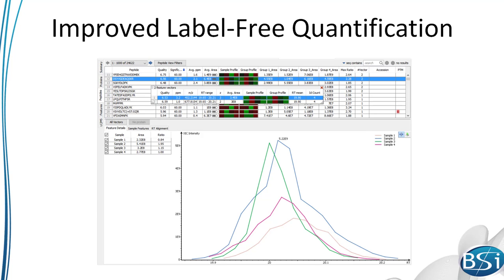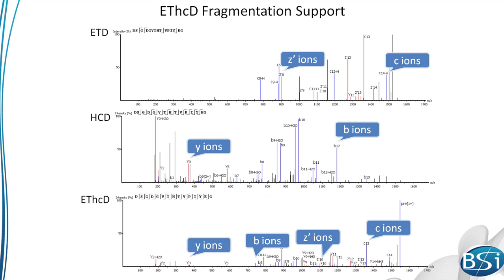In the de novo sequencing and identification tools, machine learning has been used to create a fragmentation option that accurately identifies peptides from spectra generated using ETHCD fragmentation.